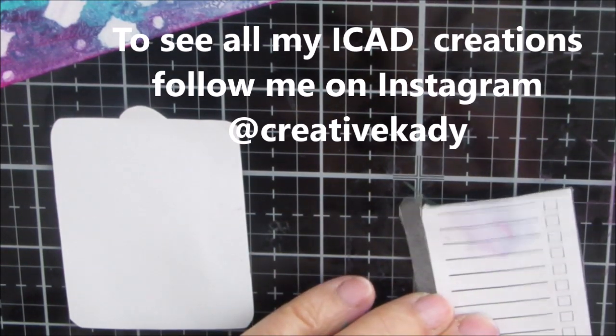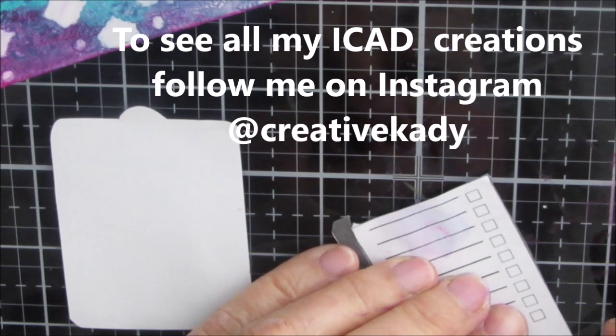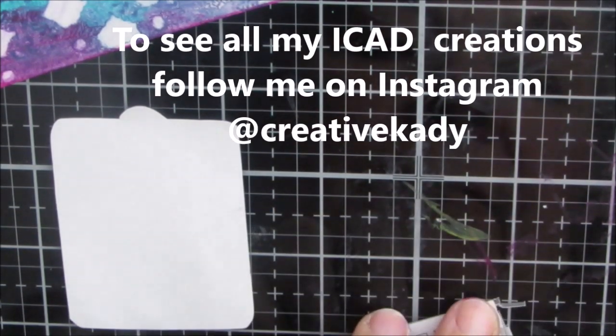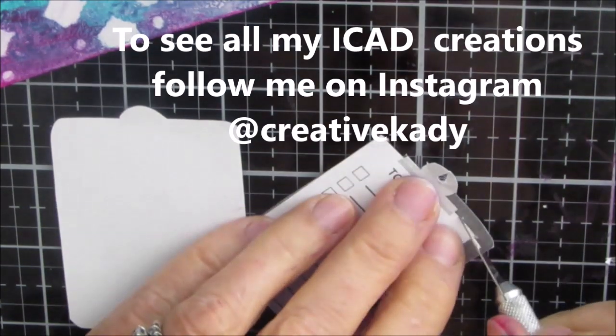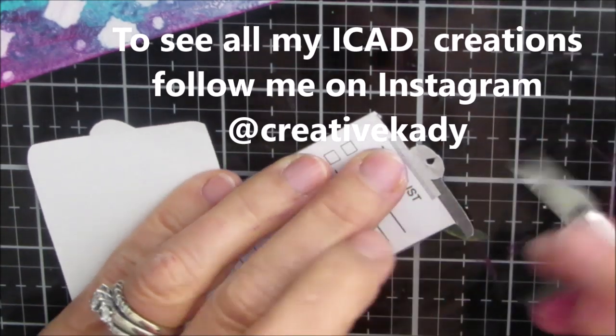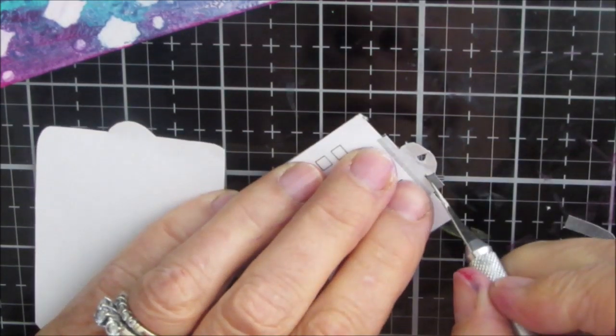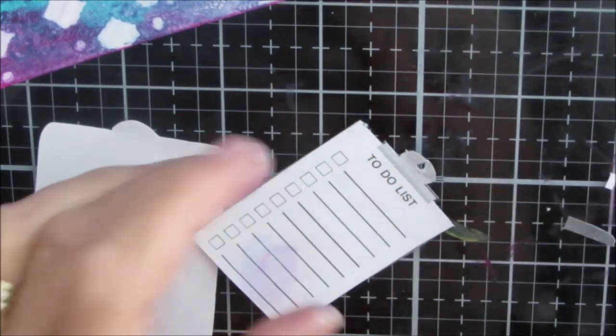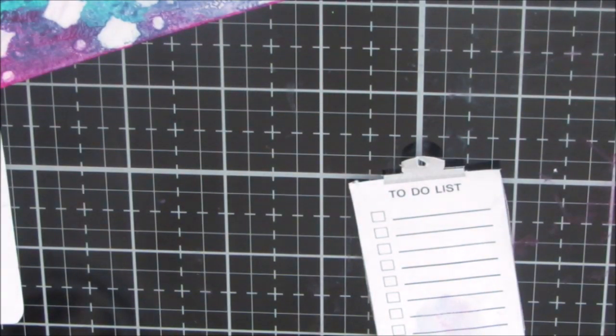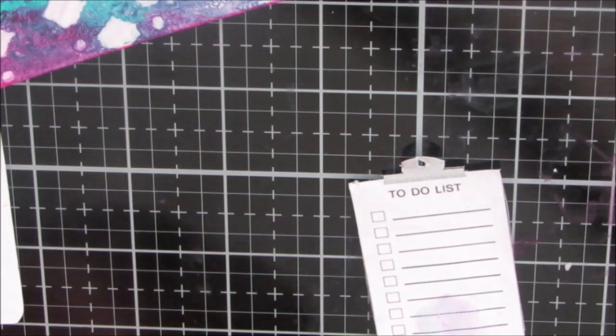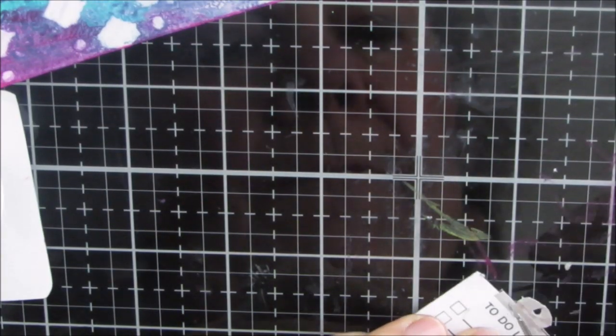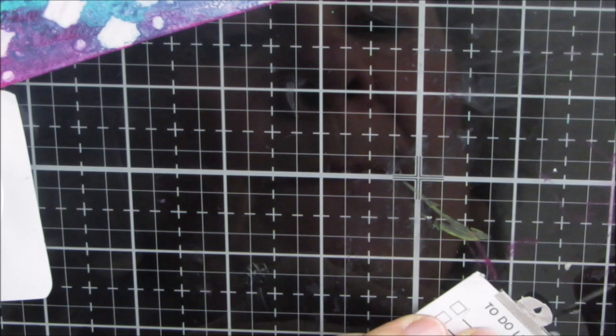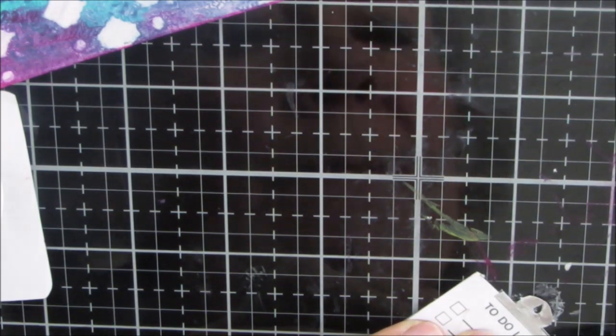So to see all my iCAD creations, you can follow me on Instagram at creative katie. I don't think at this point in time that I'm going to be doing a video for everything that I create, and that way you're going to see everything and get all the details. So underneath this, I am working on Tim Holtz's glass media mat, and I love it. And as you saw, I am cutting right on it with the Exacto knife. I believe that it said that you can do this. It has not scratched my plate.